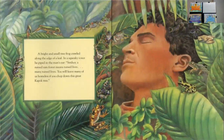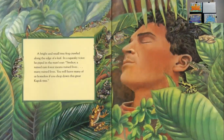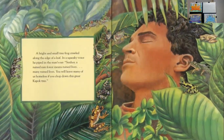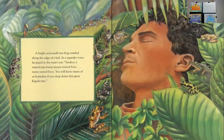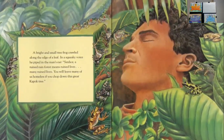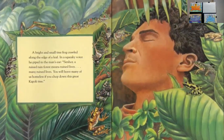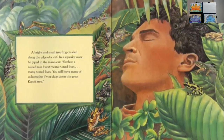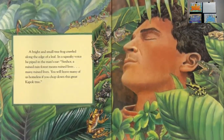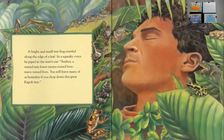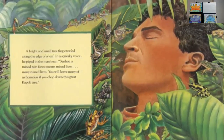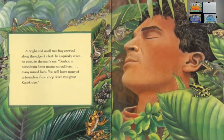A bright and small tree frog crawled along the edge of a leaf. In a squeaky voice, he piped in the man's ear. Senor, a ruined rainforest means ruined lives, many ruined lives. You will leave many of us homeless if you chop down this great Kapok tree.